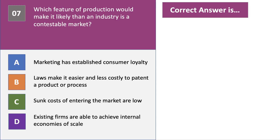What makes it more likely that an industry is a contestable market? The right answer is C. One of the features of a contestable market is that the sunk costs, or the exit costs of entering the market, are low. In other words, if you decide to leave, the costs are pretty insignificant. All of the other factors actually make it harder for new firms to come into the market.